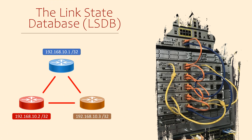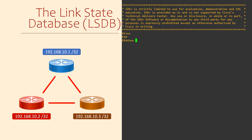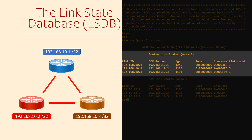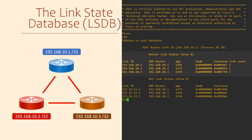Let's take a look at an LSDB. We can do this with the show IP OSPF database command. Here we see the entries in the LSDB. Each piece of information is called a link. Router Link States is the first section — this is information about OSPF routers in the network. We have three routers in the topology, so there are three entries here.